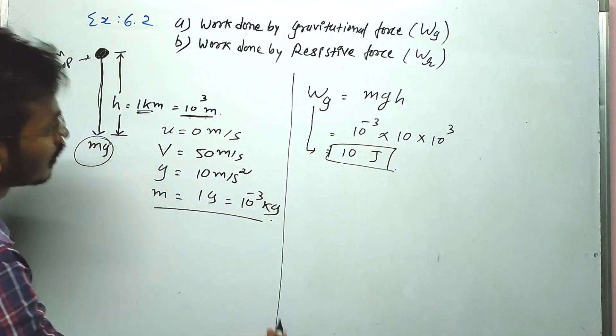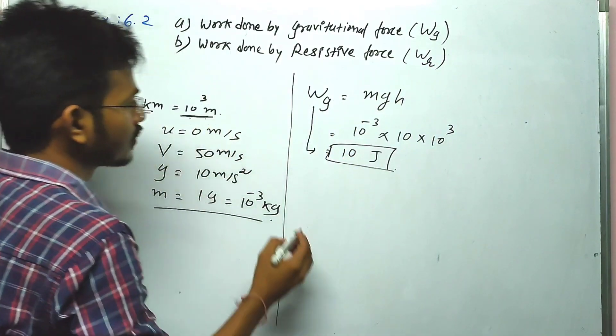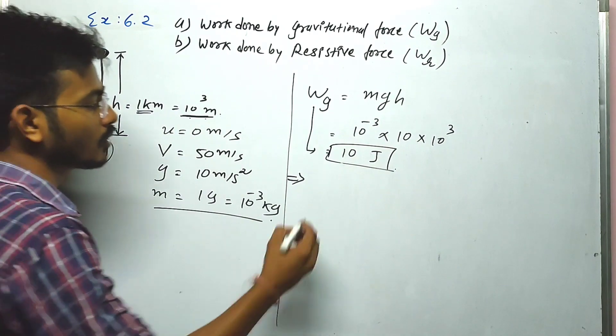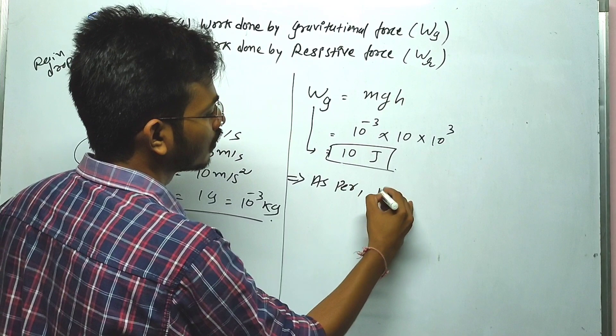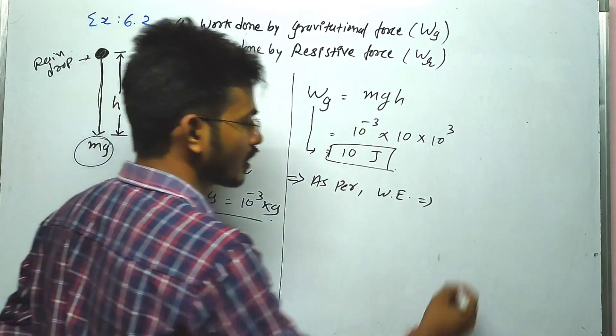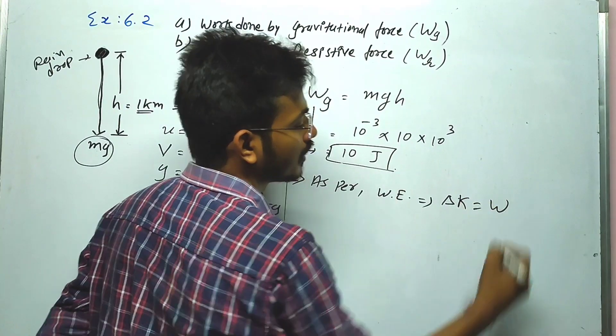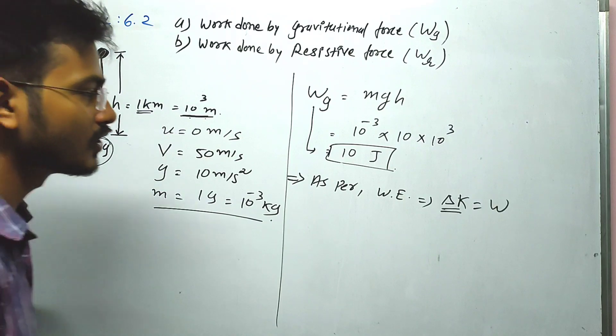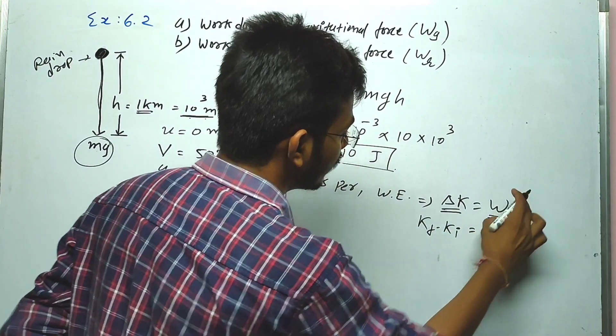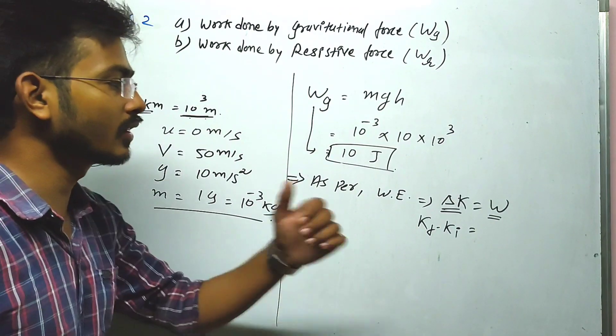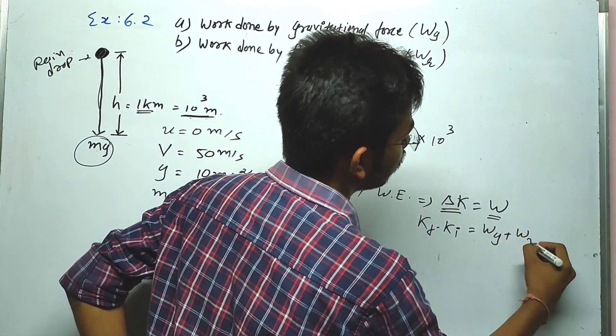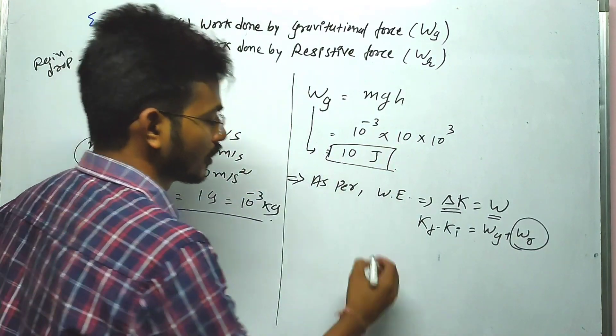Now we find work done by resistive force. Before that, we use the work-energy theorem. The work-energy theorem equation is delta K equals W, where W is the total work. Delta K equals WG plus WR.